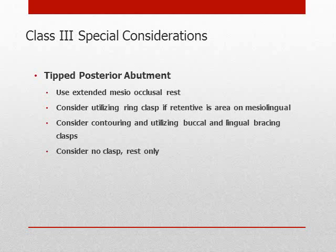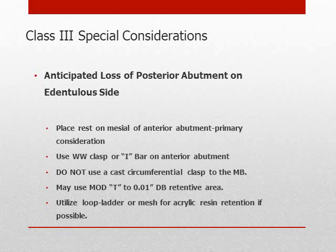Frequently the posterior abutment is tipped and rotated or has an otherwise unfavorable prognosis. Ideally the tooth is orthodontically relocated. The abutment may be used in the normal manner if tipping is not severe, with an extended occlusal rest seat. The abutment may use clasps which only provide bracing, or the tooth may only support a rest with no clasps. In the event that one or more terminal posterior abutments could be lost, the partial denture is designed similarly to the Kennedy Class I arch or the Kennedy Class II Modification I arch, which could extend the serviceability of the partial.